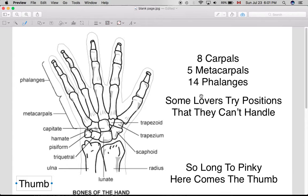So the bones of the hand, there are 8 carpal bones which are in the wrist, 5 metacarpals which are in the palm, and 14 phalanges which are the digits.